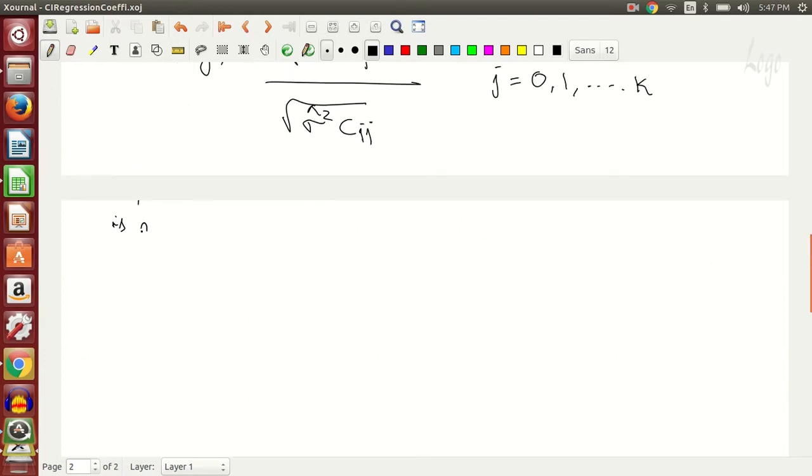So the above term is distributed as a t distribution with n minus p degrees of freedom. n is the number of observations, p is the number of regressors.